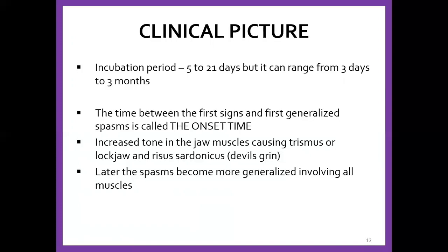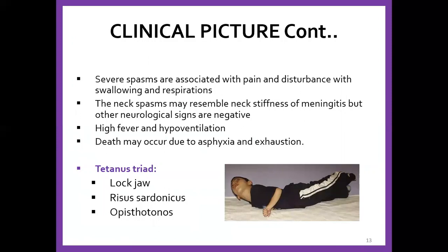Later the spasms become more generalized. It starts around the head and face region, then becomes generalized. When it becomes generalized, we have opisthotonus — you can see a baby forming like an arc, where the back of the head wants to get to the heel of the legs. The neck posture may resemble that of meningitis but is very exaggerated. Then when it starts affecting the breathing muscles, the patient will have hypoventilation, and what will ultimately kill the person is asphyxia and exhaustion. The classical signs are lock jaw, risus sardonicus, and opisthotonus.